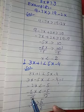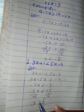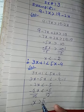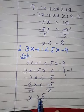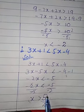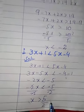Students, we divided by a negative number, so the sign of inequality changes. Therefore x is greater than 5 over 2. This is our answer.